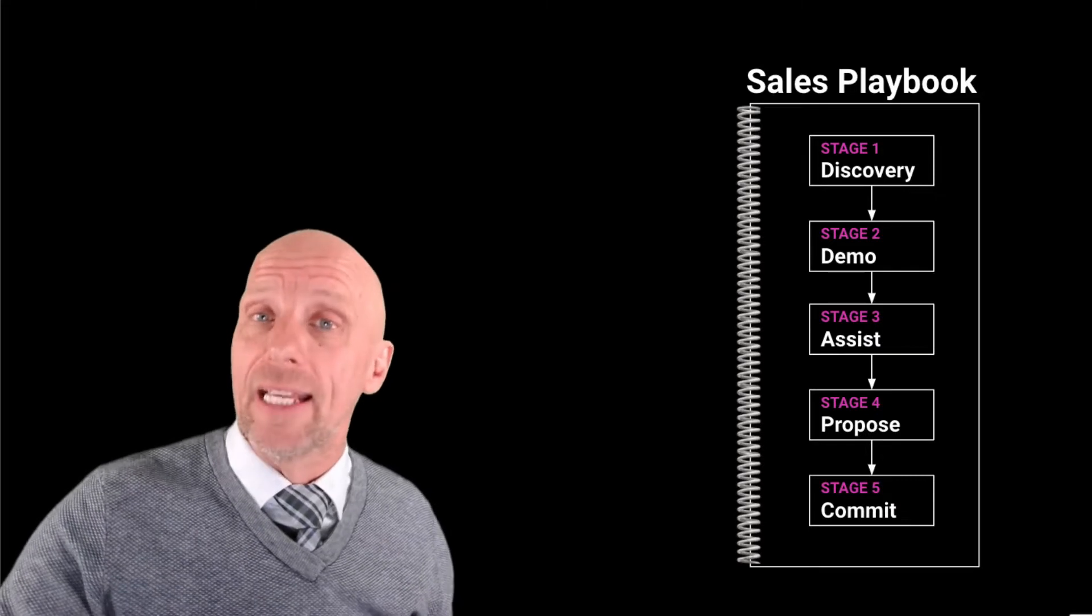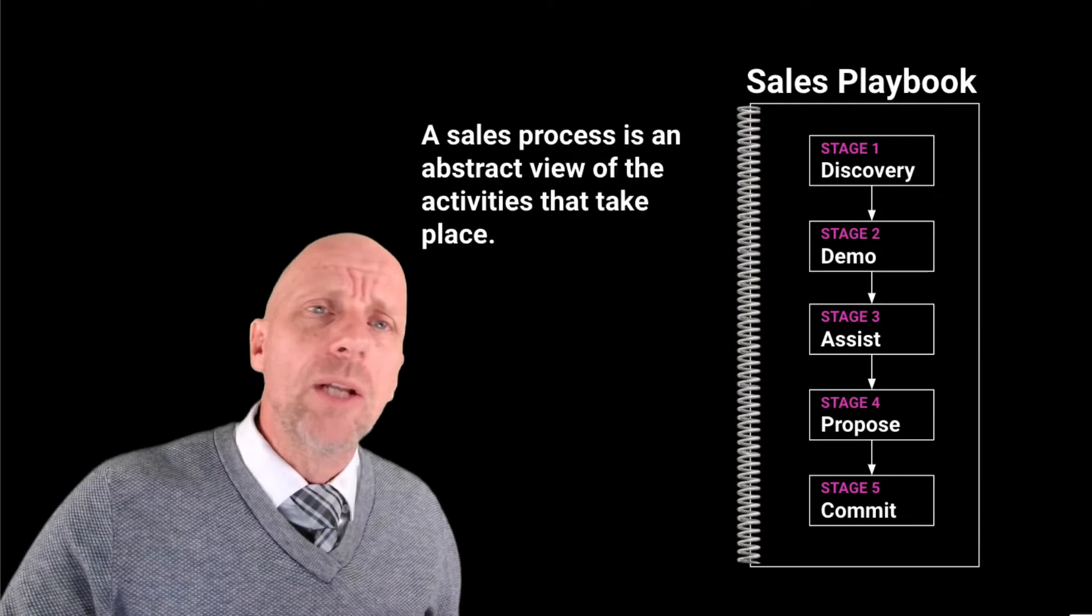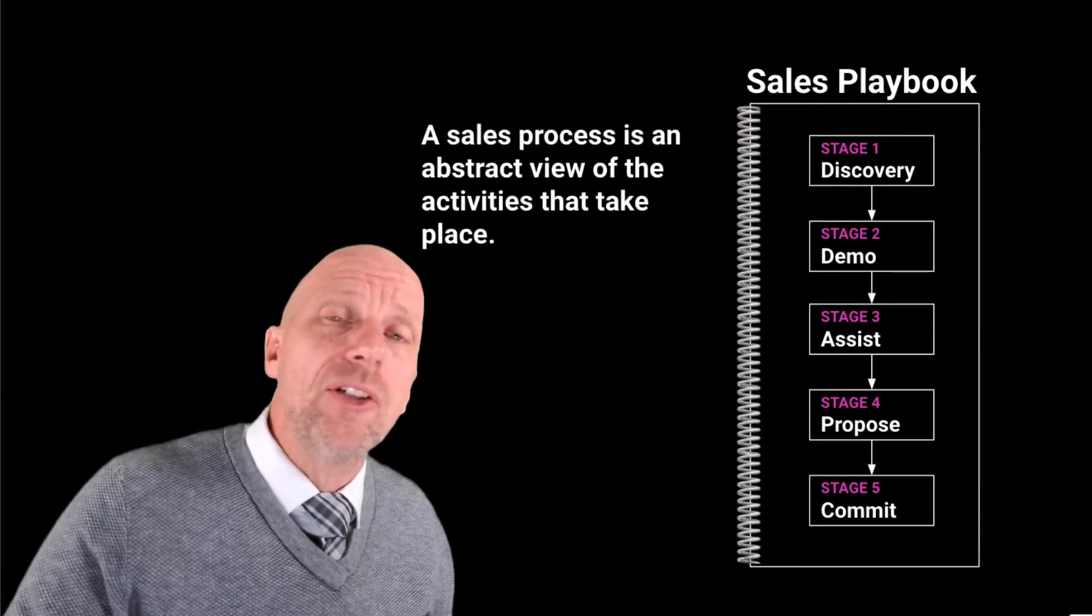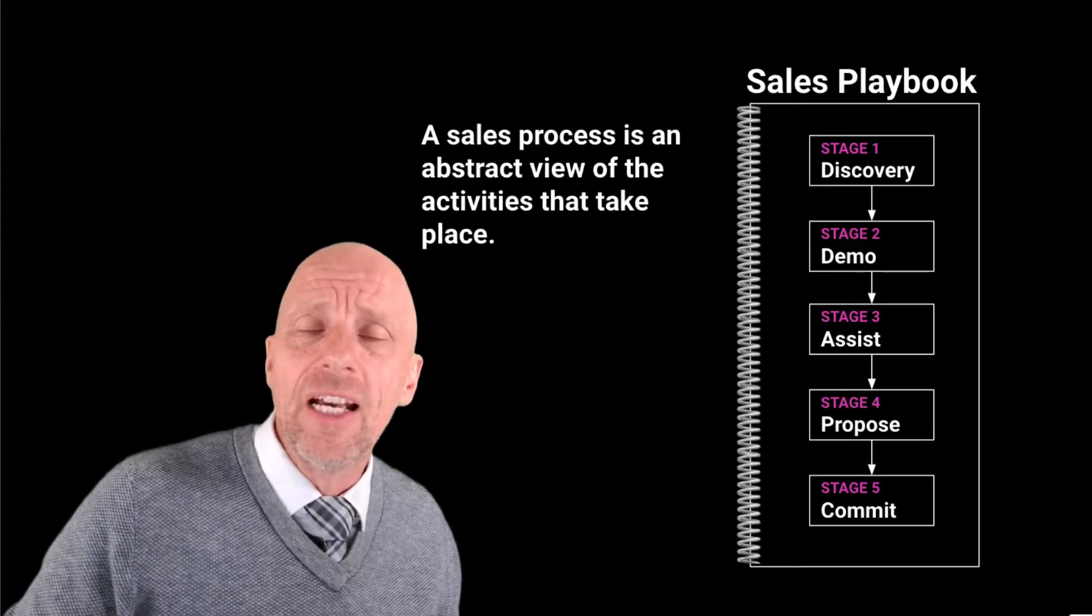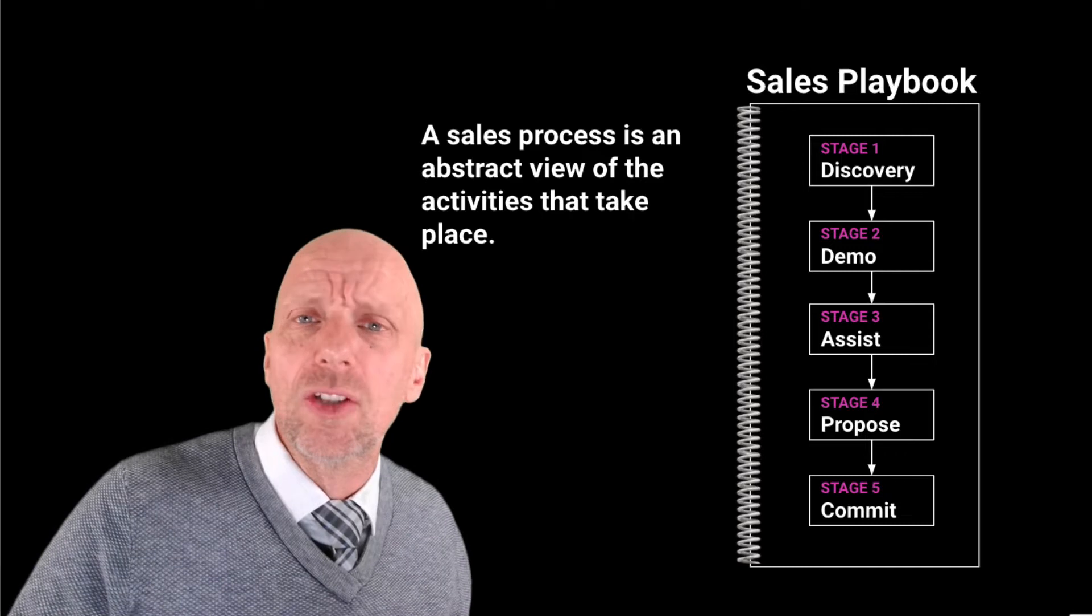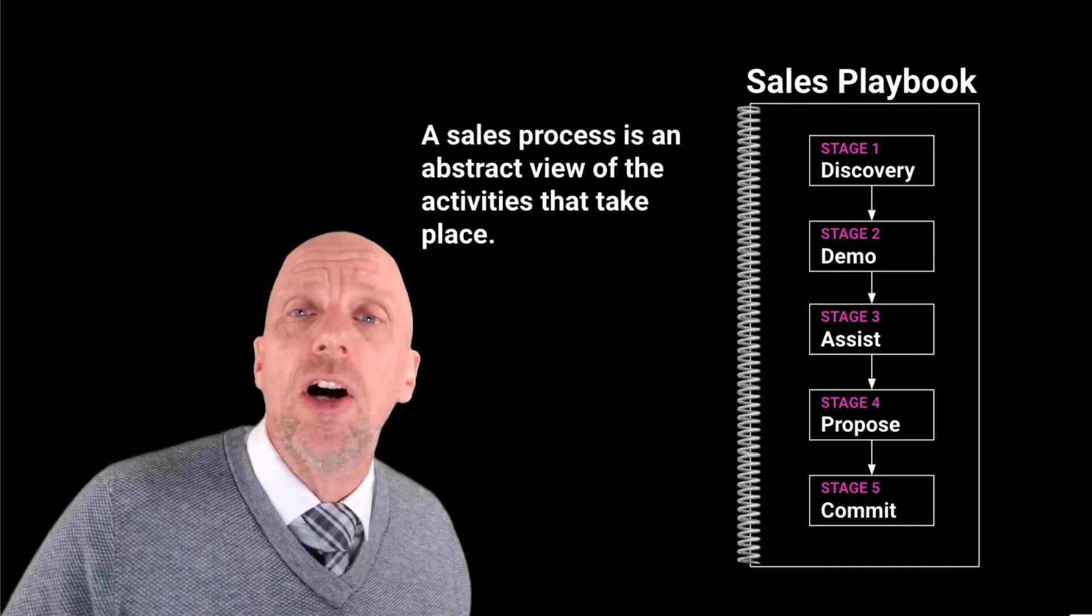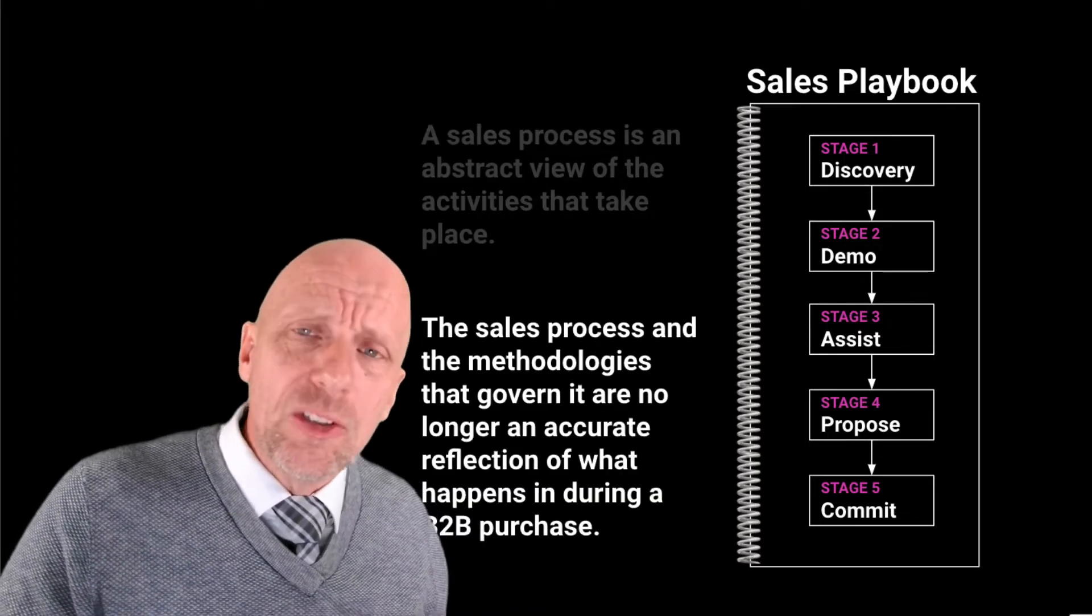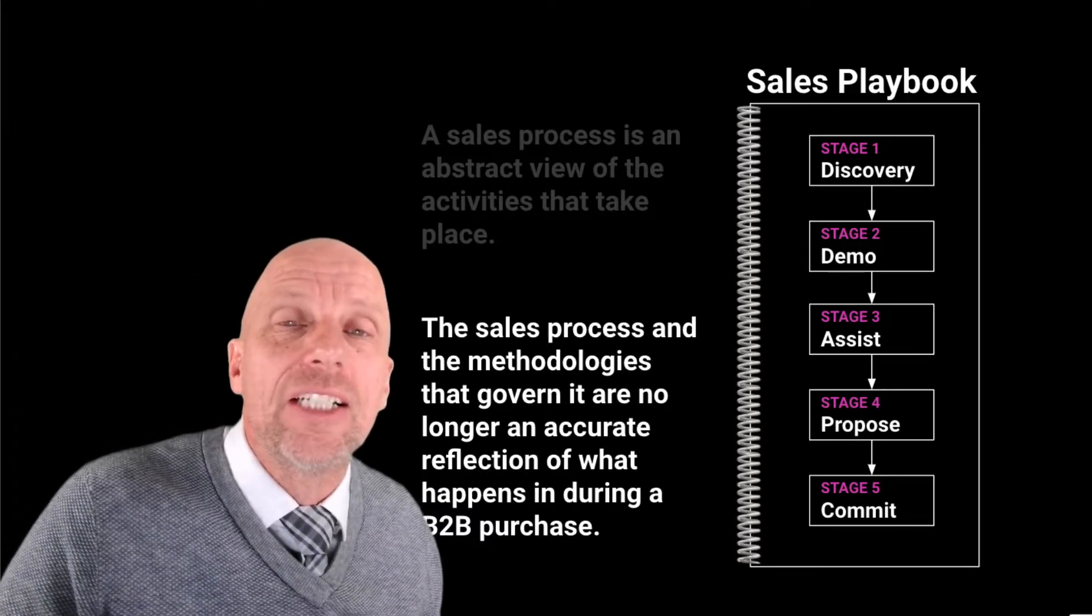I'm referring to the sales playbook. In this case, I use a five-stage sales playbook: discovery, demo, assist, propose, and commit. Enterprise has more stages, high velocity has fewer. What I'm going to say is that this sales process is an abstract view of the actions taking place. In discovery, you may do a demo, and in the demo, you may be doing a discovery.